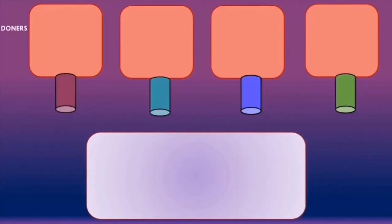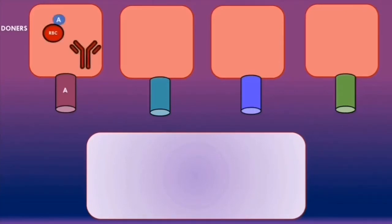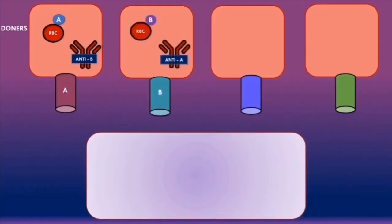Here we have schematic diagrams of red blood cell packets representing the donor's red blood cells. Blood type A means the red blood cells contain A antigens and the antibodies are anti-B antibodies. Blood type B means the red blood cells have B antigens and the antibodies are anti-A antibodies.